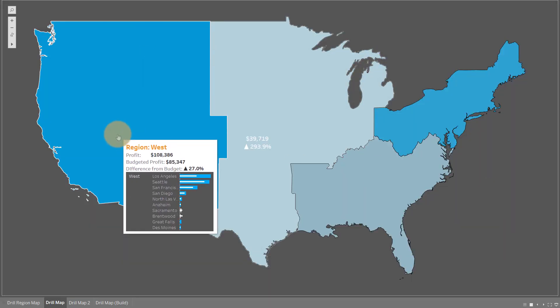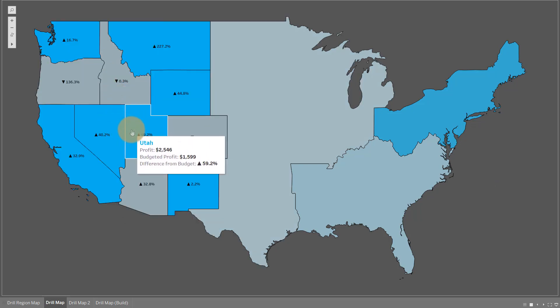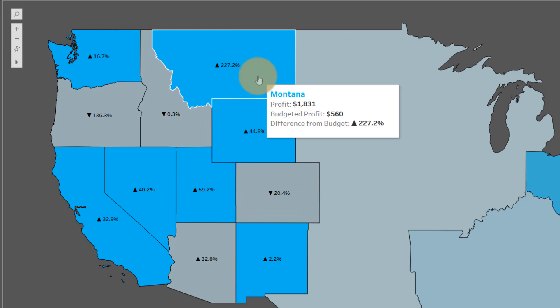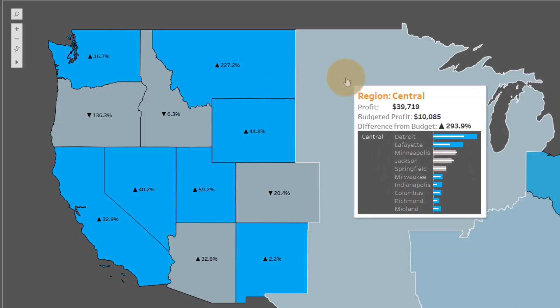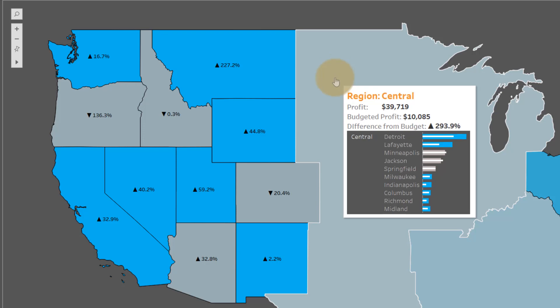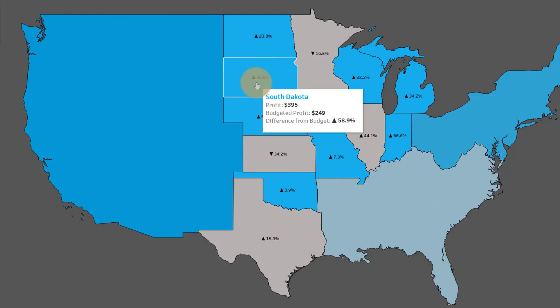So today, back in Tableau, we're going to talk about drilling from region into states. As you can see, as I drill down here from my West region, I can take a look at the states that are underneath. I'm looking at a difference from budget — basically profit versus budgeted profit. As I step over the region here you can see I've got a top 10 filter on my cities within that region that have the highest profit. Check my previous video if you want to learn how to do this top 10 effect for your region. I can drill in here to a region, then see the constituent states and get an update on how the difference from budget is doing.